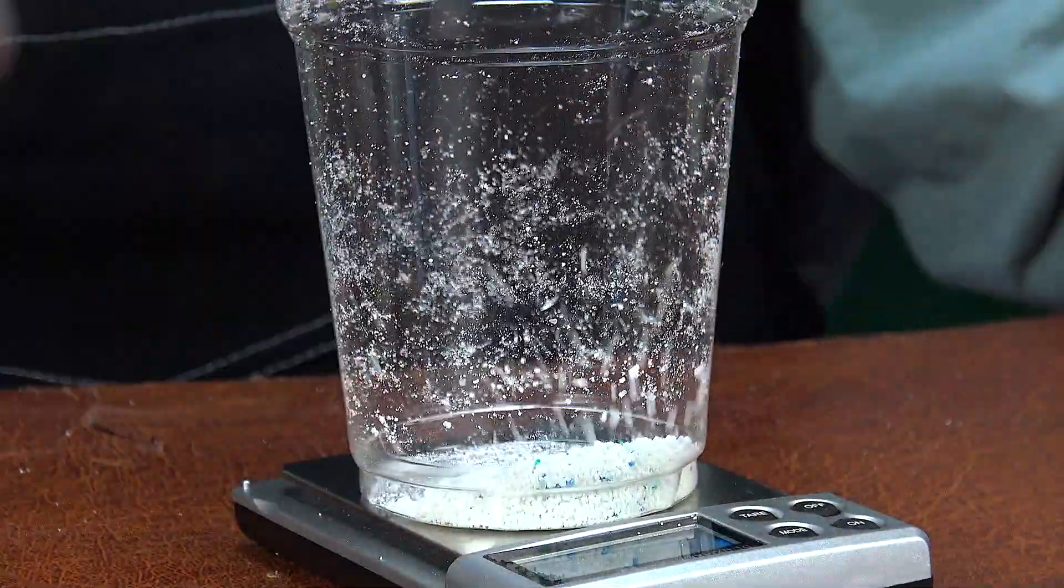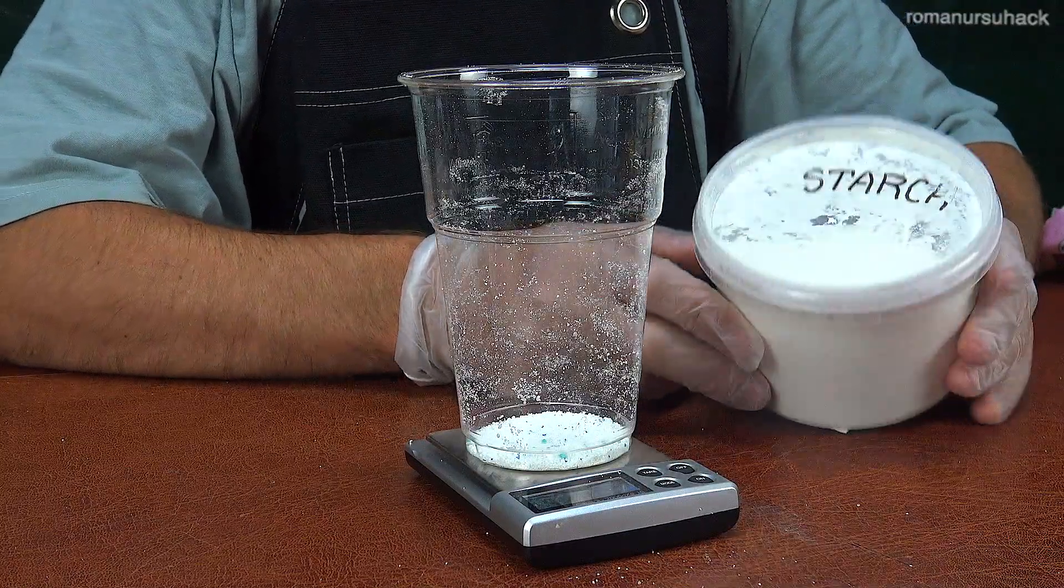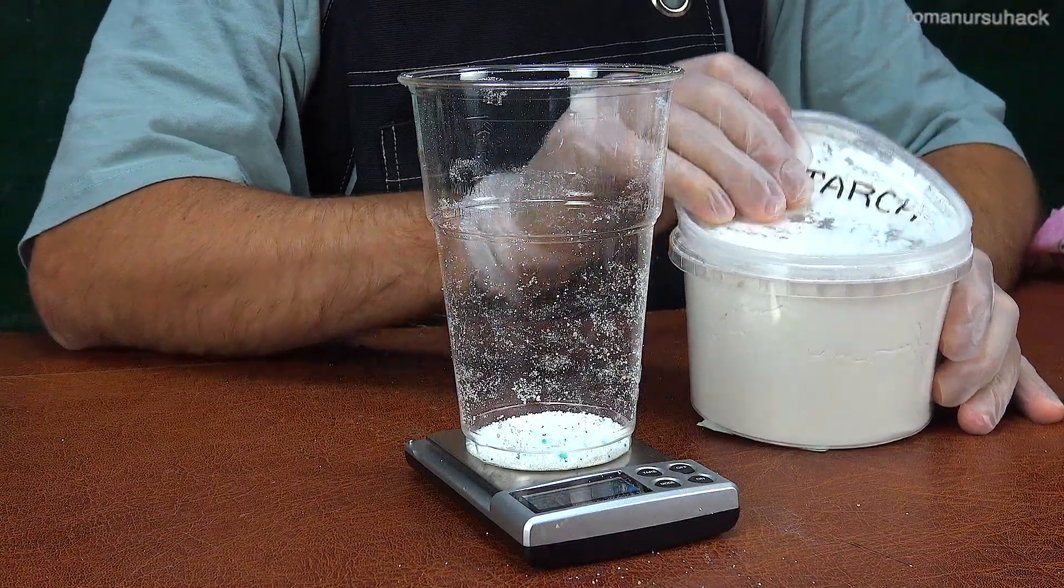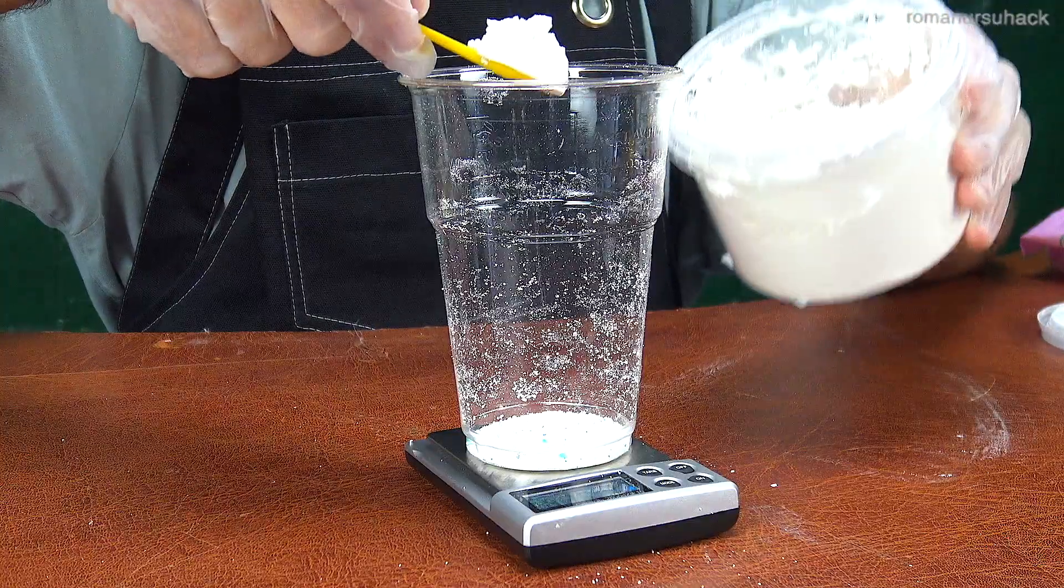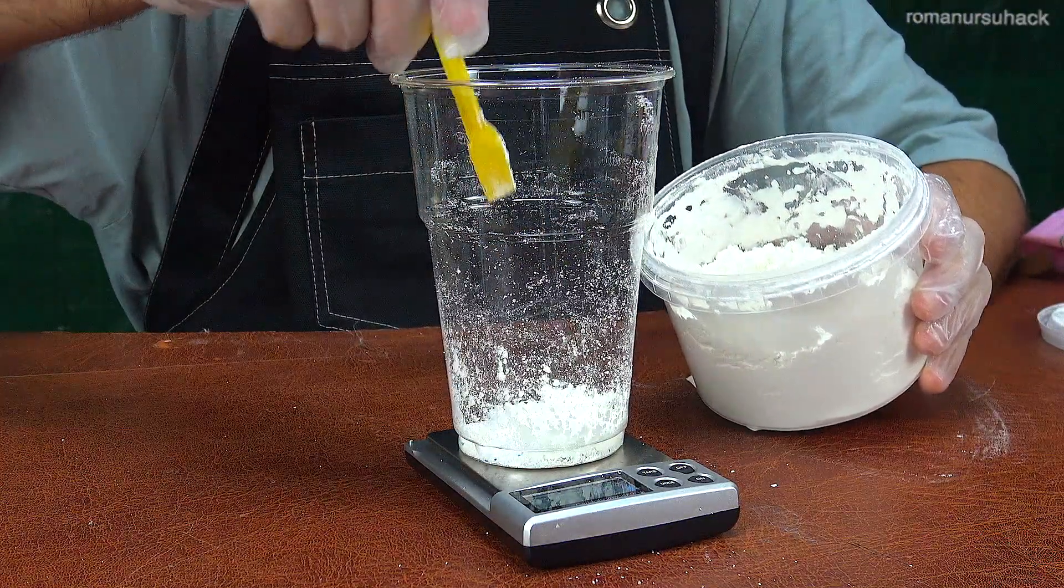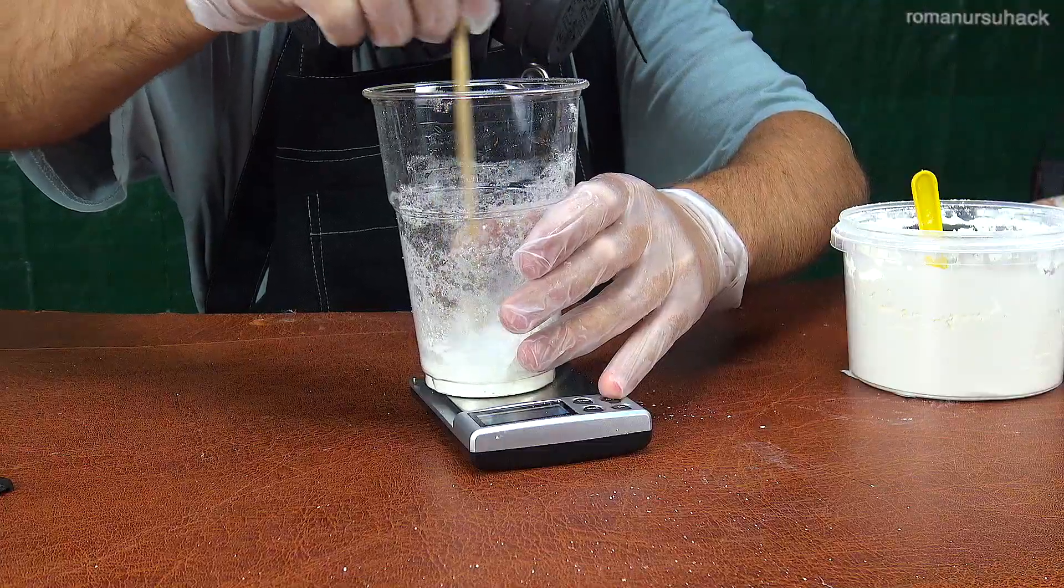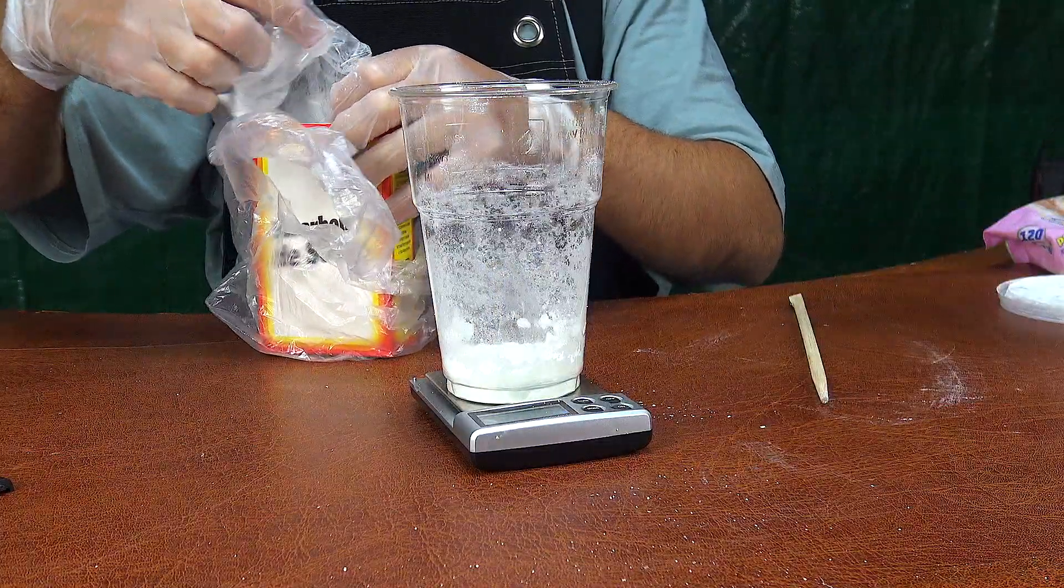Right now, I'm measuring about 10 grams using electronic scales and then I'm adding starch. The starch here acts only as a binder to adjust the consistency—it's not part of the chemical reaction. Now, we add about 5 grams of baking soda.